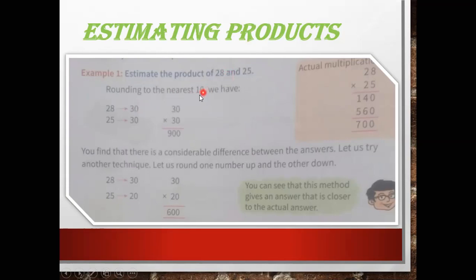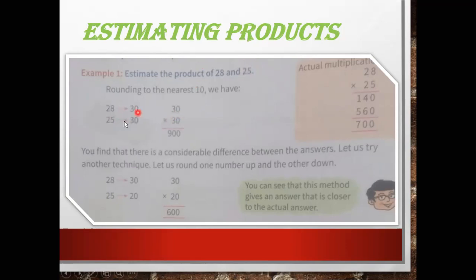Here you have to round off to the nearest 10. So 28, when you round off to the nearest 10, you will get 30. To round off to the nearest 10, you check the digit in the ones place. Here in the ones place we have 8, and if it is greater than 5, the number changes to the next ten. So 28 becomes 30.